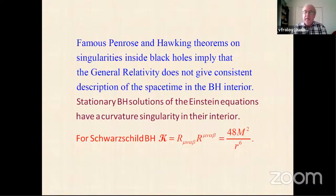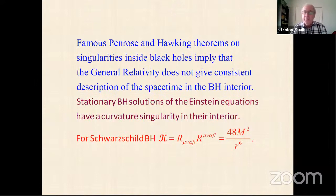We know examples of exact stationary black hole solutions in Einstein gravity, and all of them have curvature singularities in the interior. For example, for a Schwarzschild black hole, the Kretschmann invariant — the square of the curvature — is proportional to the sixth power of the radius. Physically, it means that in the vicinity of the singularity, tidal forces grow infinitely, making it impossible to have extended objects.